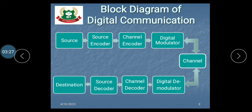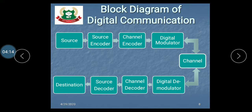The source of information can be analog or digital in nature. For example, a microphone activated by speech produces a continuous analog signal, so we need to convert that signal into discrete form. In the real world, information is continuous in nature, but when dealing with digital systems, we need to convert that information into digital signal form. That's why we use a source encoder, which converts the analog signal into a digital signal.